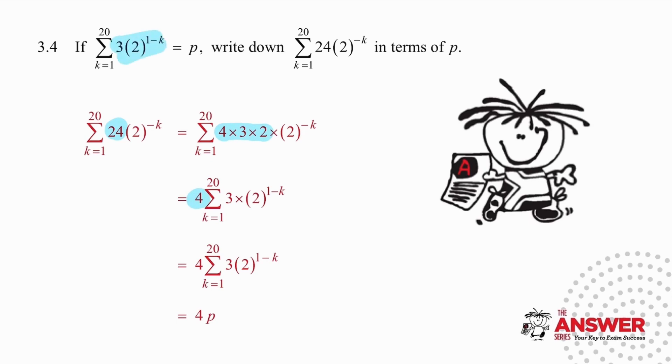The 4 gets split off and written in front because it has nothing to do with k and nothing to do with the outcome that we need. We leave the 3 in front. We take the 2 and we combine it with the 2 to the minus k so that we can express that as 2 to the 1 minus k because the exponents can be added. So there's an invisible 1 and we add the 1 and the minus k to get this result. Now we have 4 times the exact expression that they gave us. So all we need to do is write down the answer as 4 times p. I strongly recommend that you take another look at this and then try it again on your own.